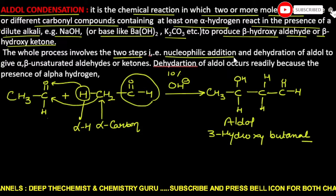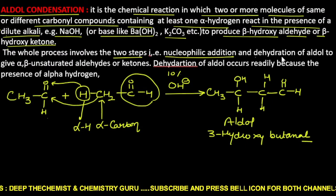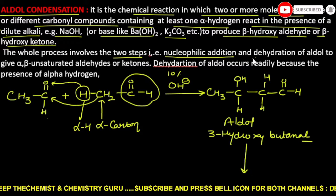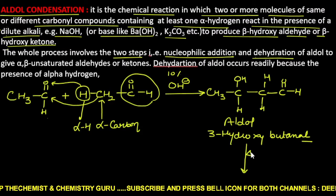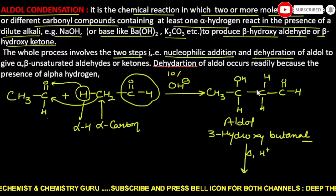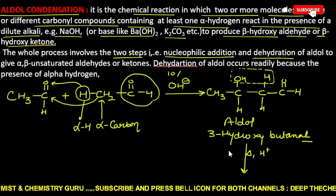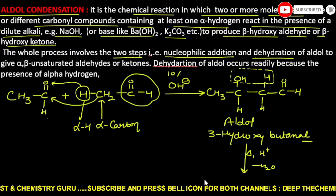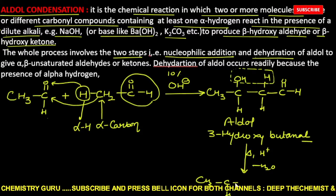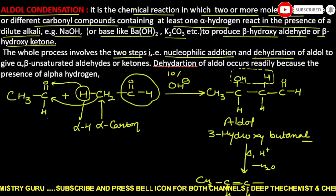This reaction actually occurs in two steps. The first step is a nucleophilic addition reaction. After that, the aldol product undergoes dehydration when heated in the presence of an acid. During dehydration, water molecules are eliminated, and a double bond forms between the two carbons, giving an alkene product.